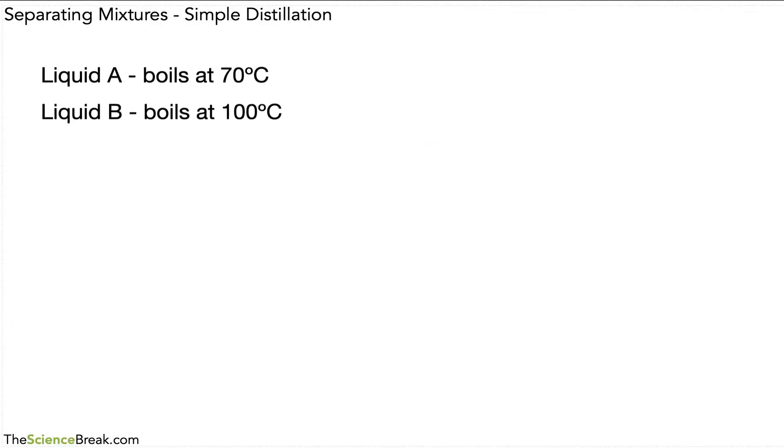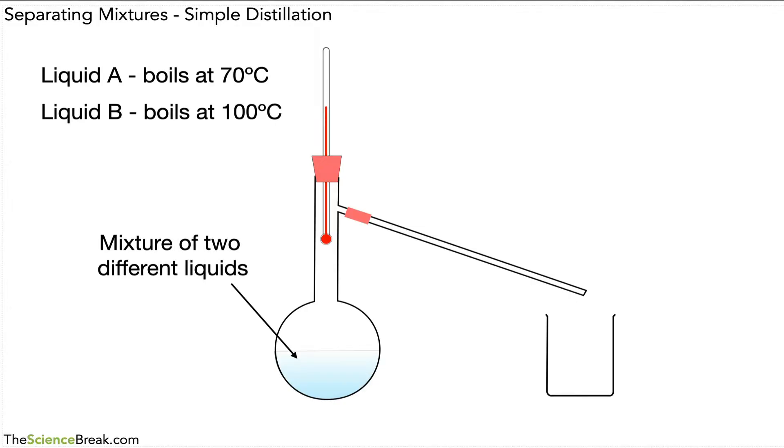This is what the apparatus looks like if we're going to carry out simple distillation. In the flask at the bottom we've got the mixture of our two different liquids, a thermometer, and a delivery tube going to a beaker.